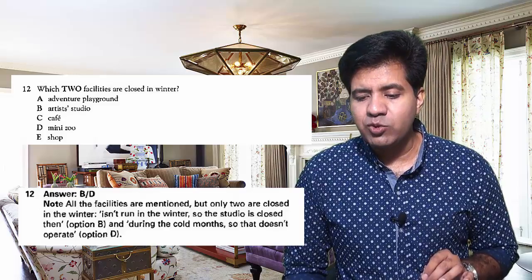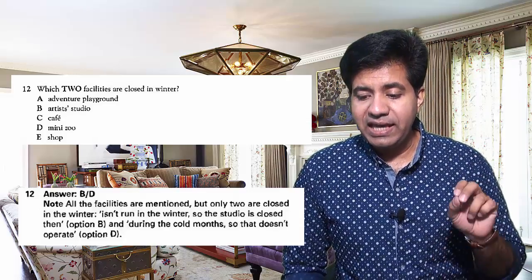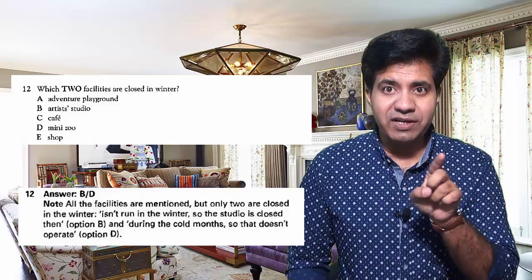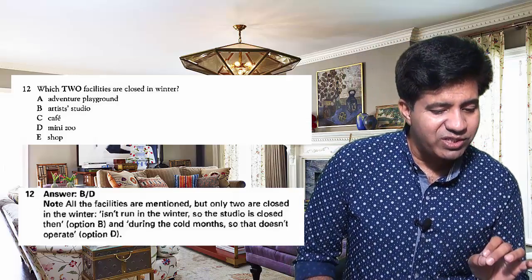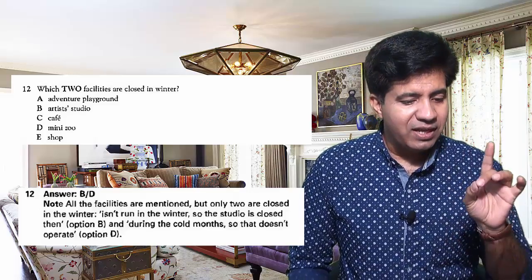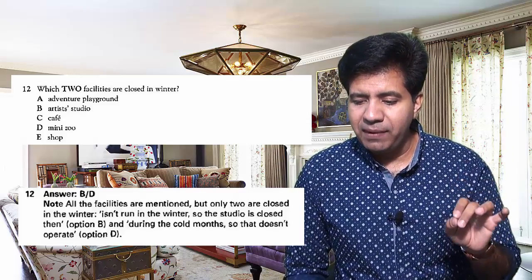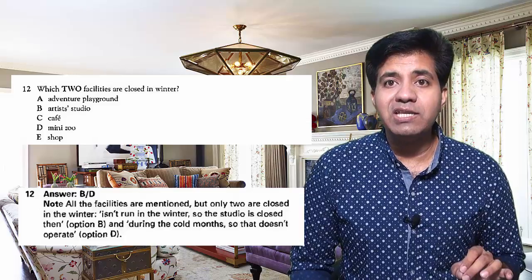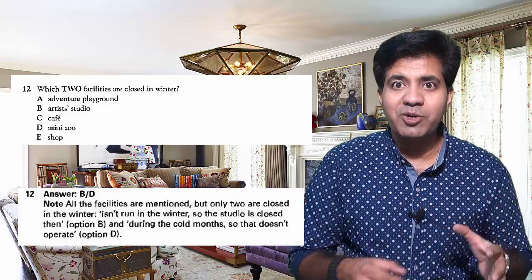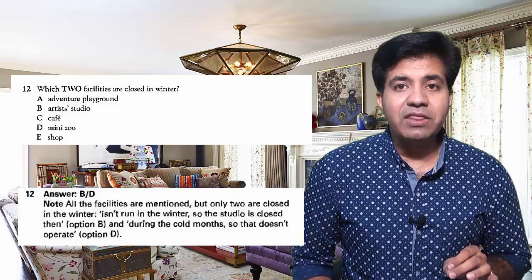Question 12: all the facilities are mentioned but only two are closed in the winter. They use the phrase 'isn't run in the winter' — so the studio is closed. Option B — artist studio — is one answer. Then they say 'during the cold months, so that doesn't operate' — that is option D, the mini zoo. They take the animals inside to keep them from the cold. So option B and option D are the correct answers for question 12.